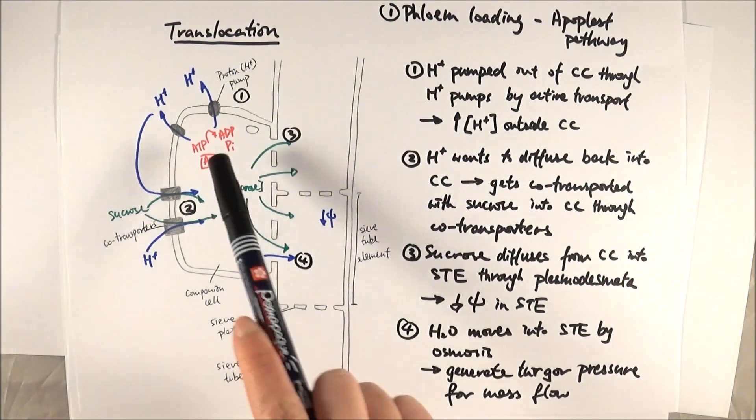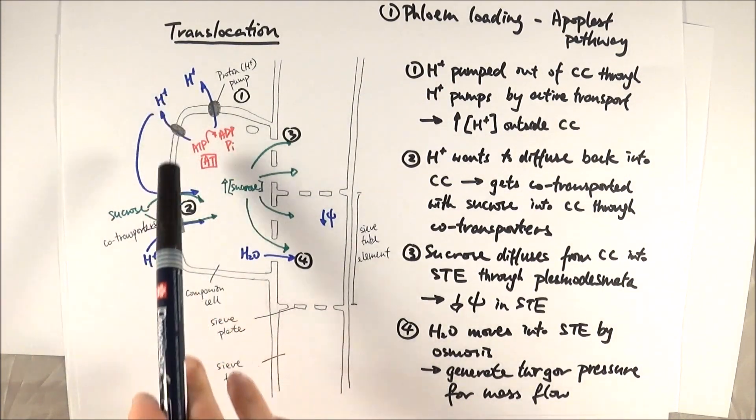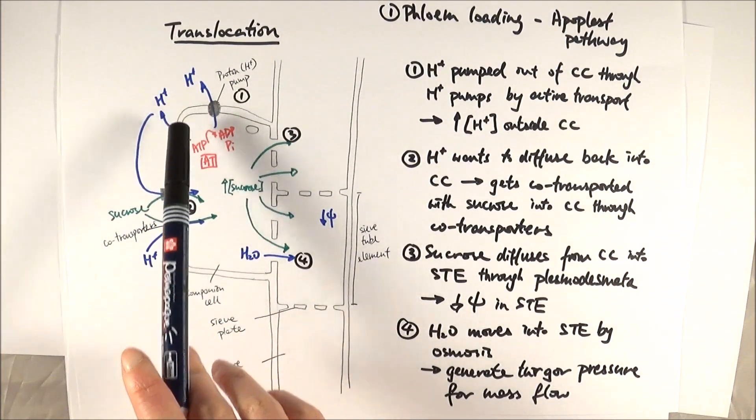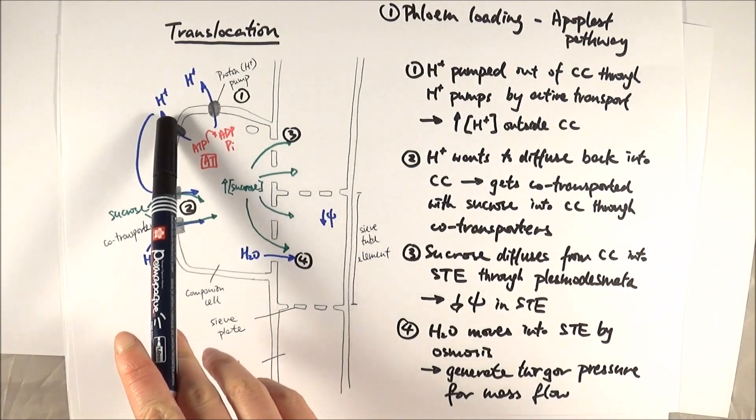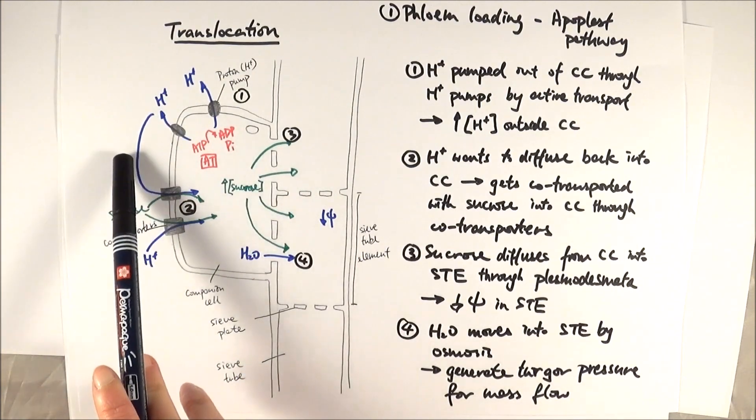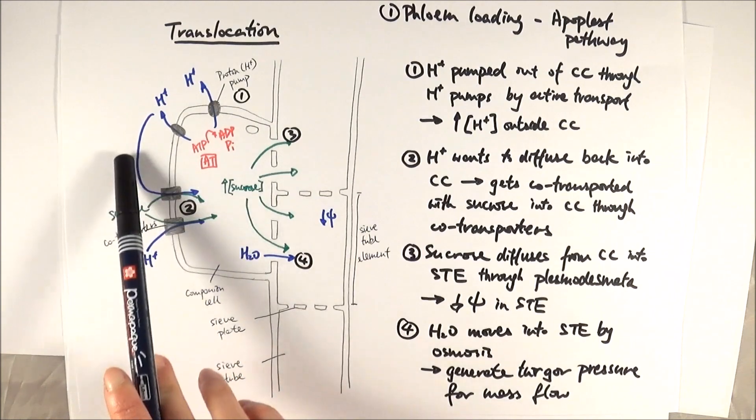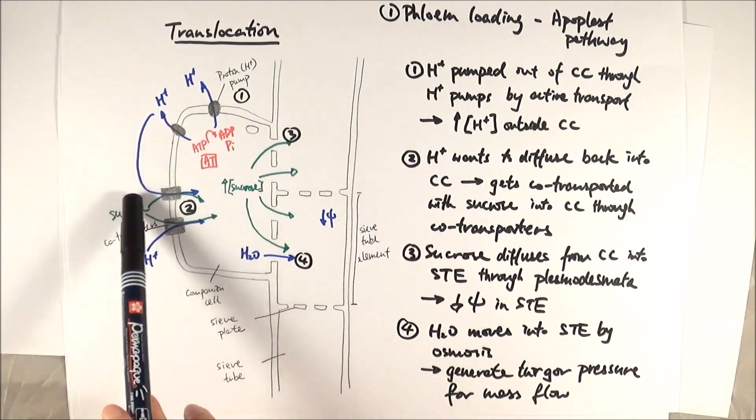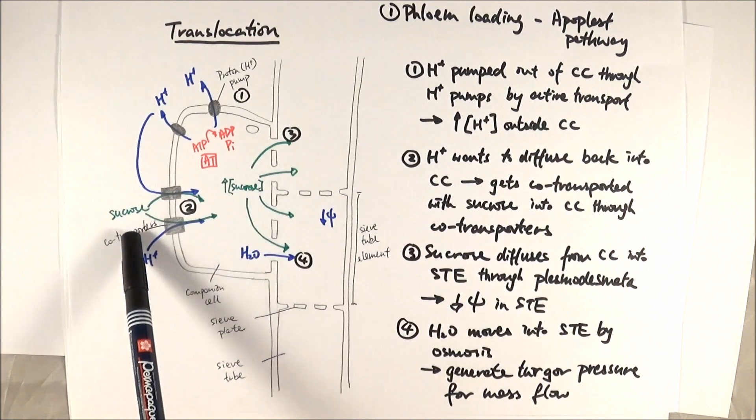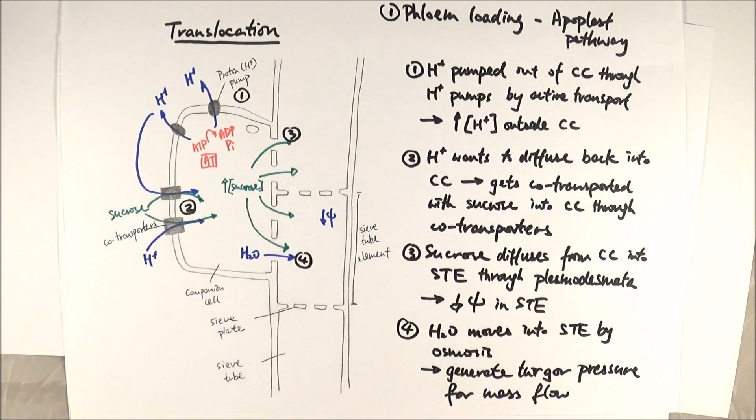At the very beginning, we've got protons inside the companion cell, and they are pumped out by active transport through the proton pumps using ATP. Then these protons, having a higher concentration outside, want to go back into the companion cell. Therefore, they get co-transported with sucrose through the co-transporters by facilitated diffusion.